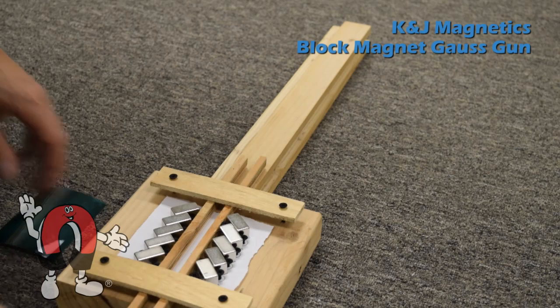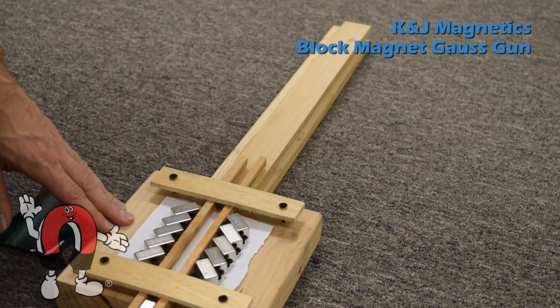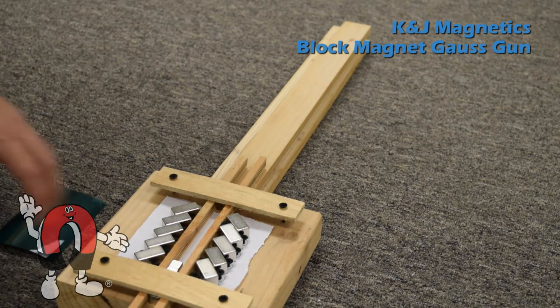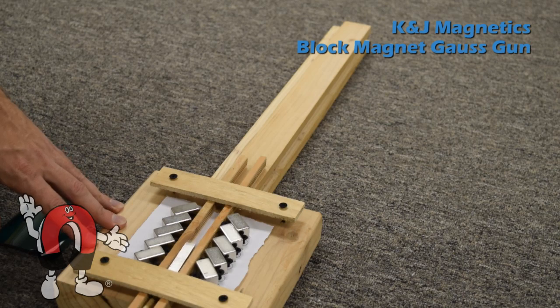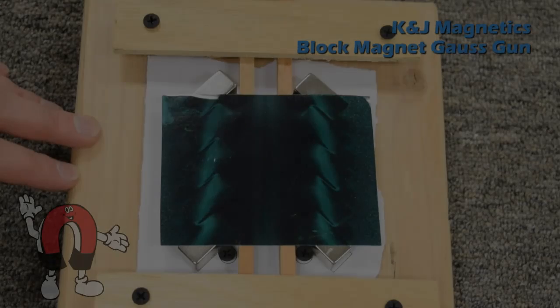Here's the same demonstration with the same magnets as the projectile, only we use angle blocks on either side. We found it shoots out about the same.